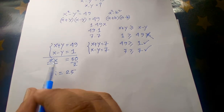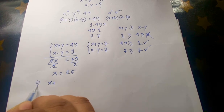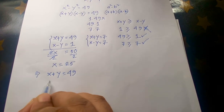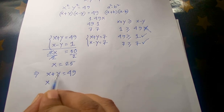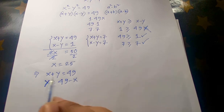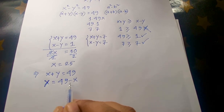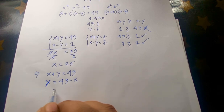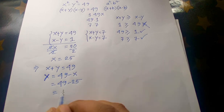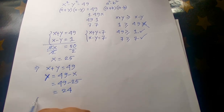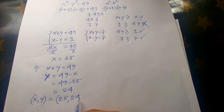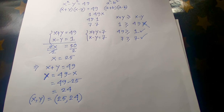To find y, using the equation x + y = 49, we get y = 49 - x = 49 - 25 = 24. So for Case 1, x = 25 and y = 24.